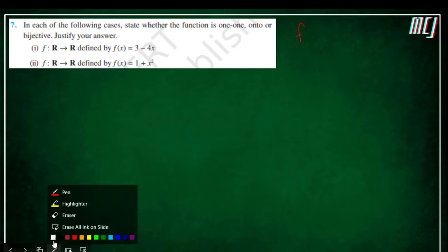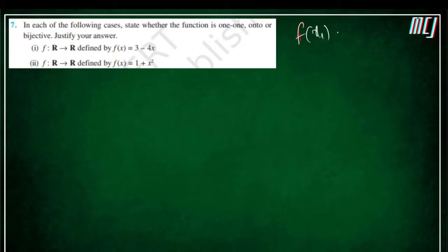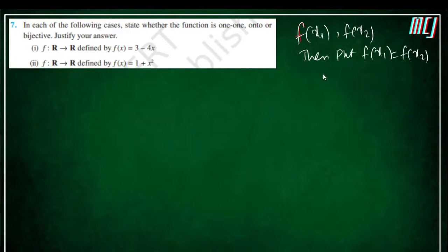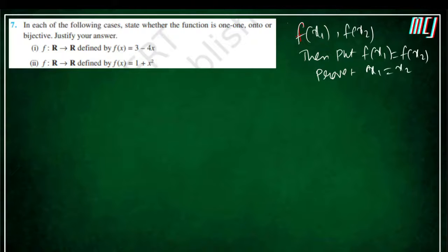First of all, for the definition — to check one-to-one, we calculate f(x1) and f(x2), then put f(x1) equal to f(x2), and we have to prove that x1 is equal to x2. This is the complete procedure.